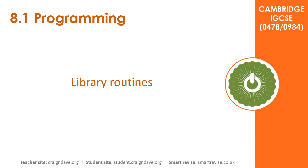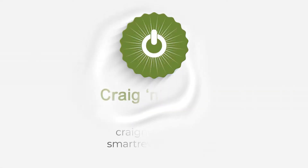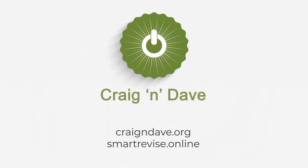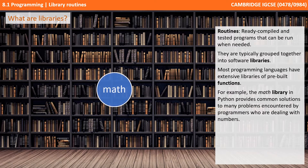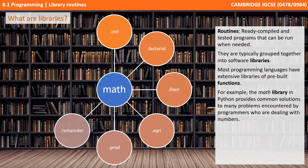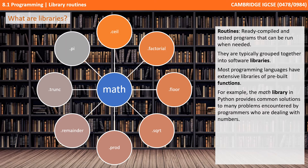In this video, we look at library routines. Routines are ready compiled and tested programs that can be run when needed. They are typically grouped together into software libraries. Most programming languages have extensive libraries of pre-built functions. For example, the math library in Python provides common solutions to many everyday problems encountered by programmers who are dealing with numbers.